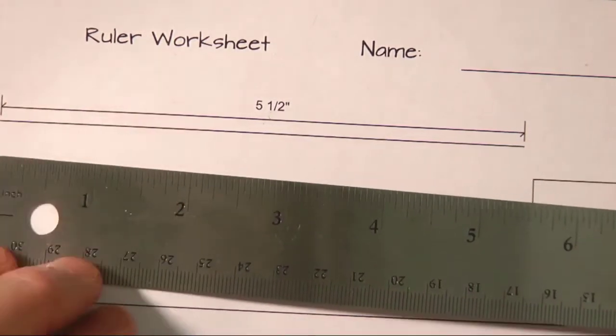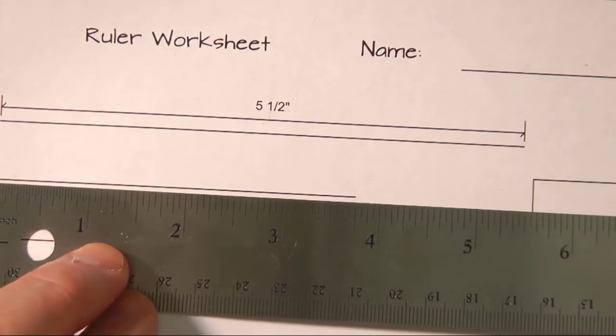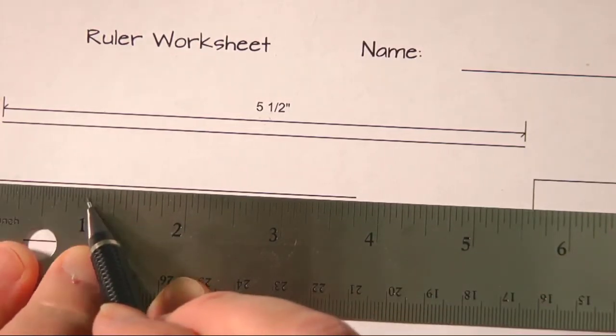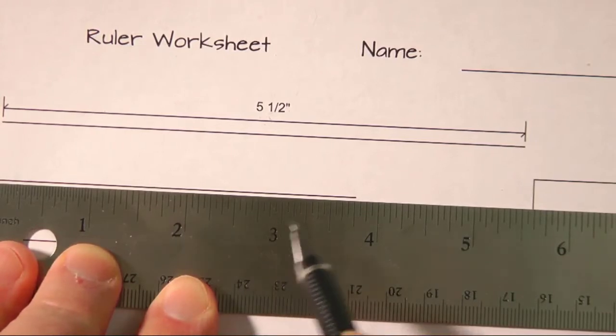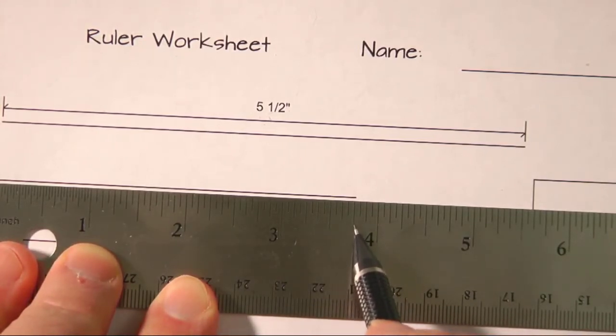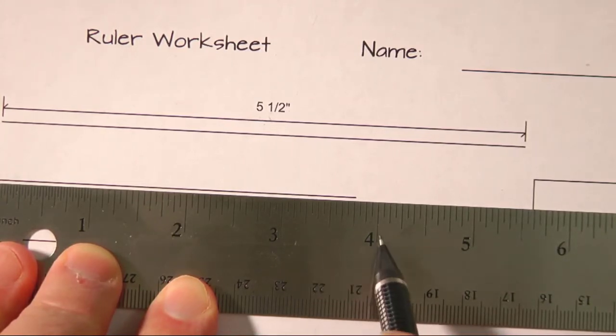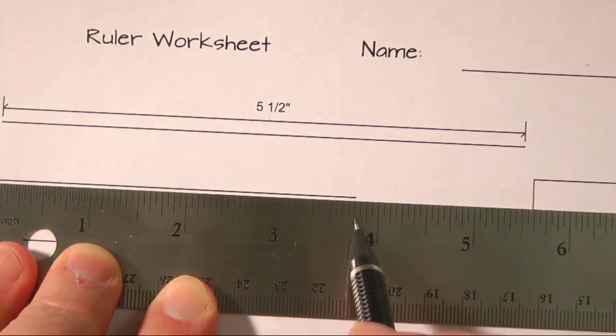Let's take this and measure the next line that doesn't have a measurement written on it. So we go from zero, one, two, three, and it ends up in this line here, which is the quarter marks. See the half inch is the longest between the inches, the quarter marks are the second longest, so that's how I can quickly tell that it's a quarter mark.